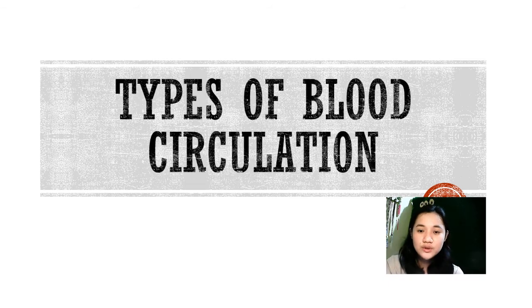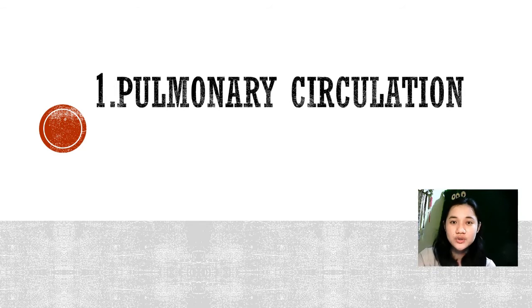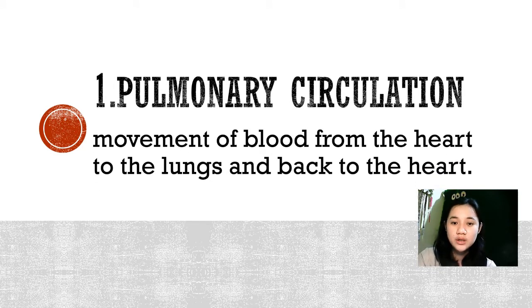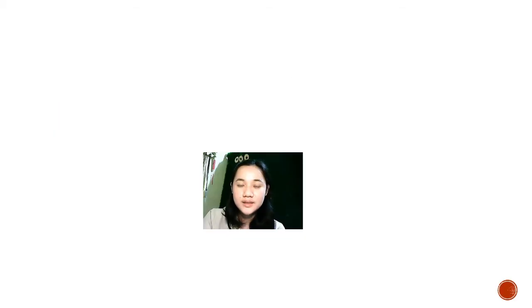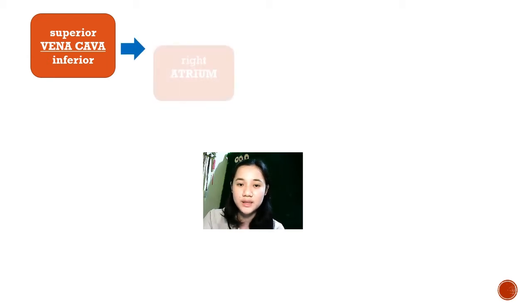We have three types of circulation. First is the pulmonary circulation, which is defined as the movement of blood from the heart to the lungs and back to the heart. This is how the pulmonary circulation takes place. First, the blood enters the superior and inferior vena cava, from the upper and the lower part of the body.